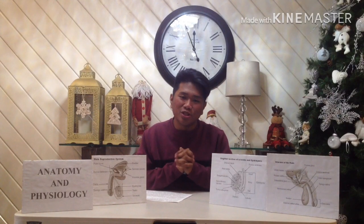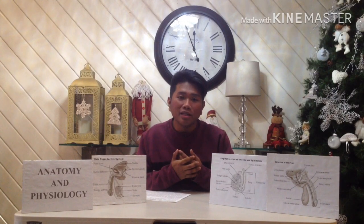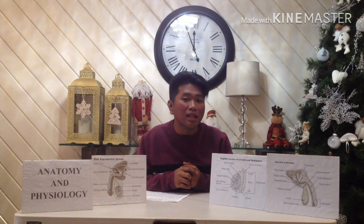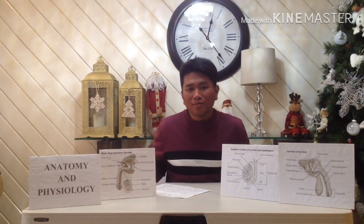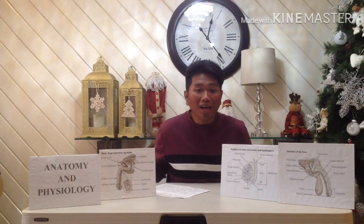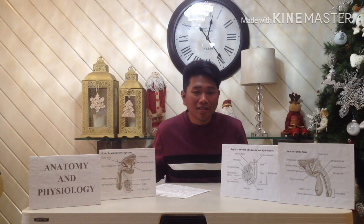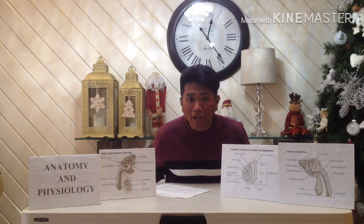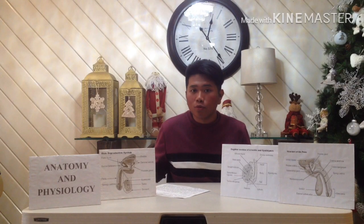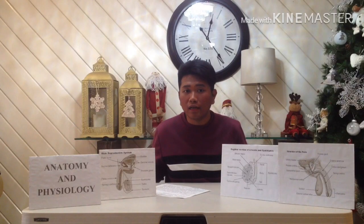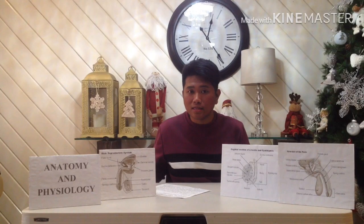Hi guys, I'm Juanito G. Calvara Jr. Today let me discuss what the reproductive system is, specifically the male reproductive system. The male reproductive system, like that of the female, consists of those organs whose function is to produce a new individual. To accomplish reproduction, this system consists of a pair of testes and a network of excretory ducts and ejaculatory ducts.